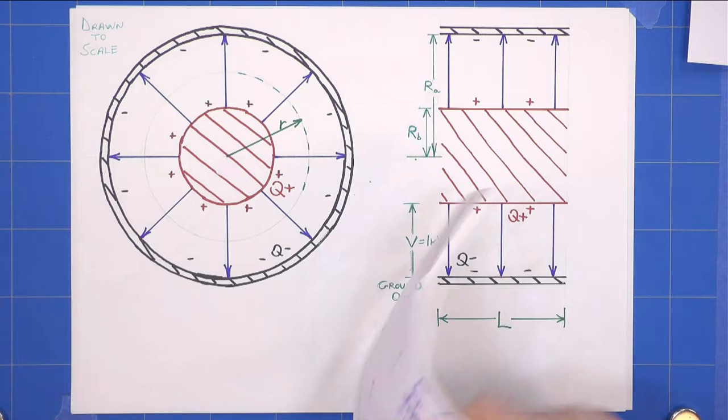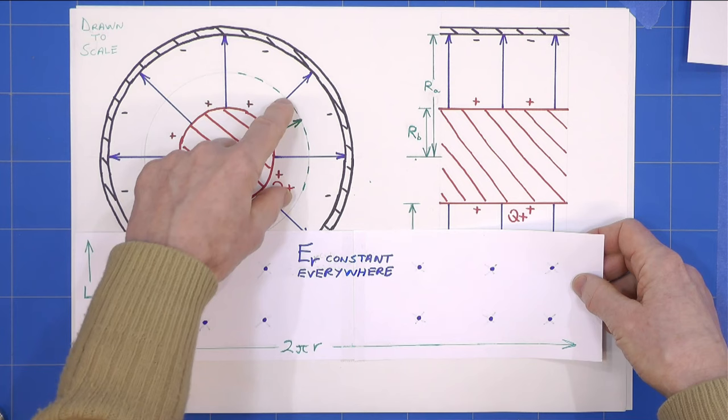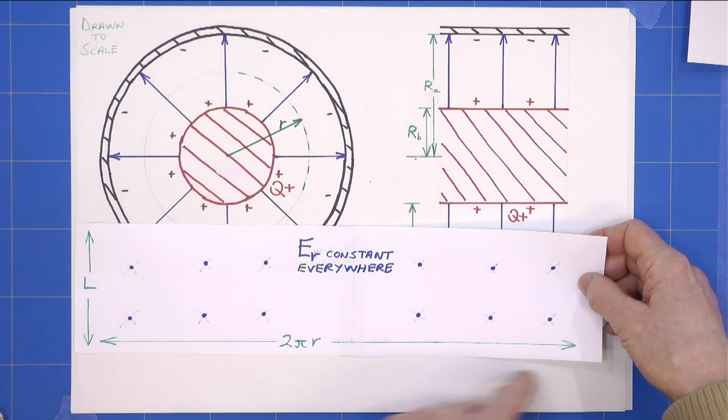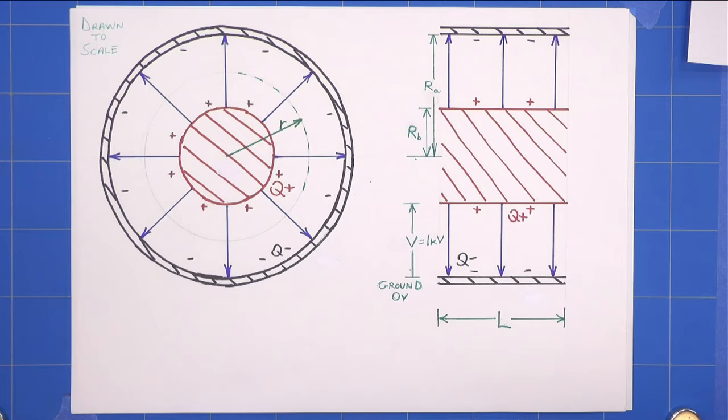If I roll the surface out, we know that ER, our value for E at this radius, is constant everywhere. And we know the area of the curved surface is simply L times 2π R. I've drawn this to scale by the way, I forgot to mention. I'll come back to that later.